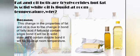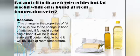Oil and butter are both examples of fats, but it is a common observation that oil is liquid while butter is solid at room temperature. This difference in properties is due to the type of bonds in fatty acids. If a fatty acid chain contains single bonds, it will be solid at room temperature, and if it contains double bonds, it will be liquid at room temperature.